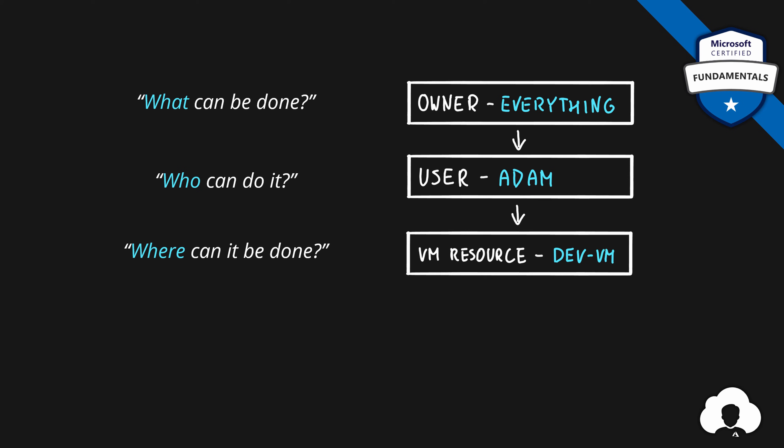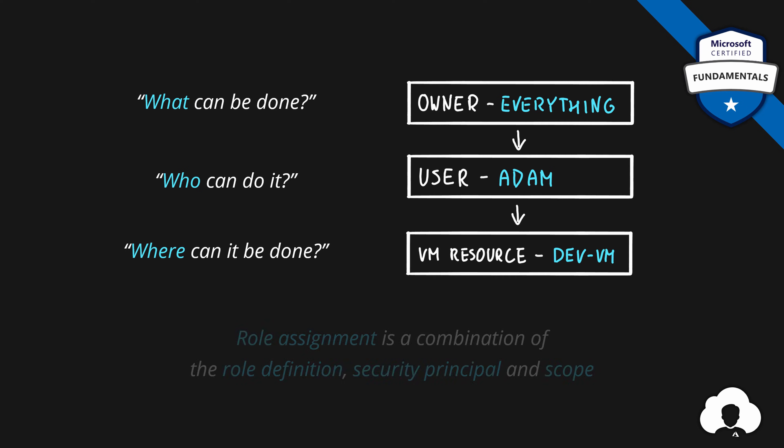Let's say you assign it to a virtual machine resource called DevVM. In this case, you can read it from top to bottom: everything can be performed by Adam on the DevVM virtual machine. And those three things are combined into something called a role assignment — simply a combination of a role definition, a security principle, and the scope.